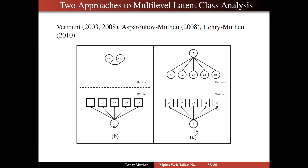Why this formulation is important is that when you turn towards latent transition analysis, you want to look at the latent class variable at a certain time point influencing a latent class variable at a later time point. What is nice about the formulation on the right is that C represents within-cluster variation, clearly separated out from between variation already on the observed item level. So all that between-level variation is pulled out of these boxes, and C influences the within part of the boxes. So C on C — the influence between C's over time — becomes a within-level influence.